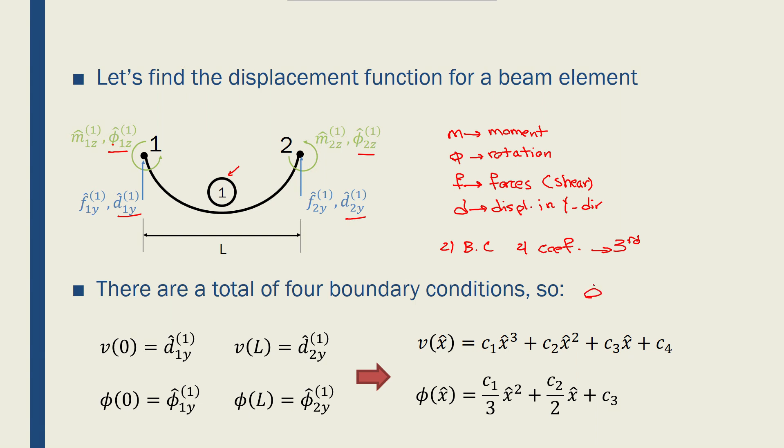And again, we find phi from this equation, derivative of the displacement function with respect to X. Because I want to find a third order polynomial, I write this equation for the displacement function: C1X³ plus C2X² plus C3X plus C4. And if I find a derivative of this with respect to X, phi becomes C1/3 X² plus C2/2 X plus C3.